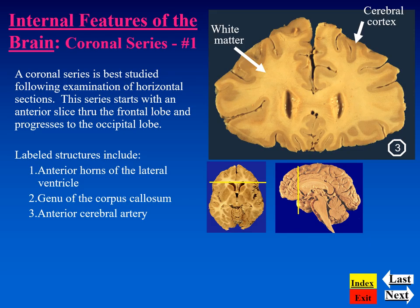The coronal series of sections will extend from anterior — from the frontal lobe — to posterior, the occipital lobe. In this section, we can see two spaces: the lateral ventricles, right and left. This would be the anterior horn portion of the lateral ventricle. Between them, we can see the corpus callosum, and that's the genu region — the most anterior part of it. We also see two anterior cerebral arteries cut in cross section as they wrap around the most anterior part of the corpus callosum.